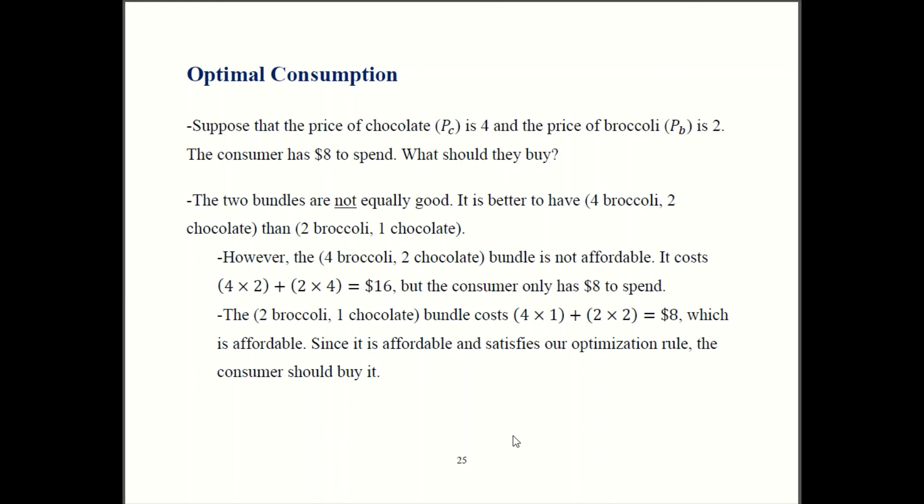So for notation, we call this a bundle. A bundle is just some combination of goods. So two broccoli, one chocolate is a bundle. Four broccoli, two chocolate is another bundle.